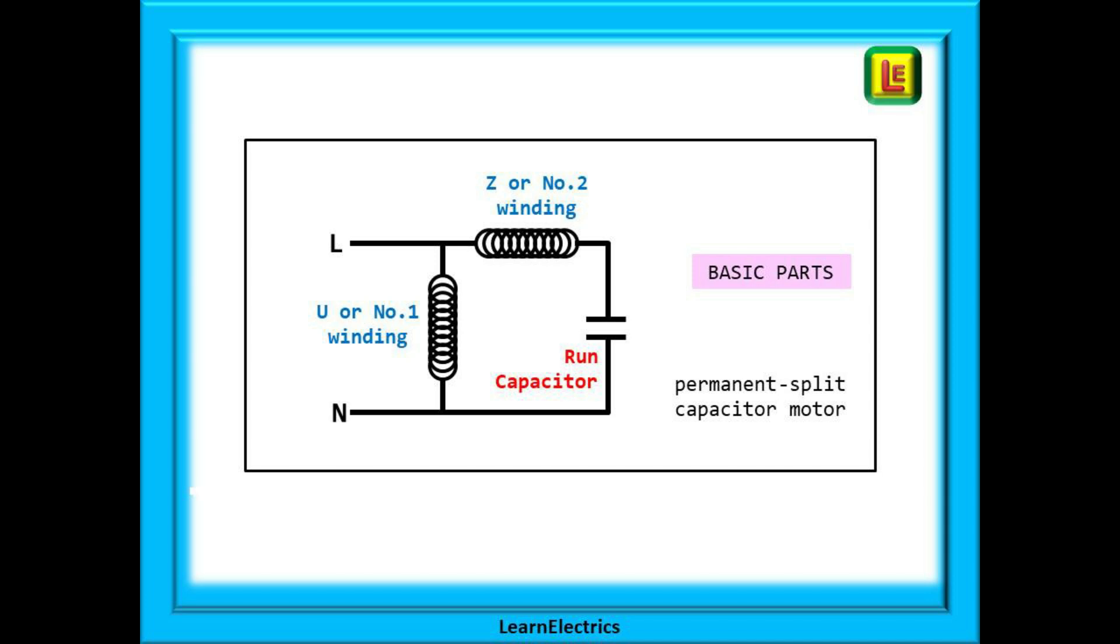If we look at a very basic motor circuit we can see that we have a number one winding that is called the U winding. Then we have a number two winding or Z winding that has a capacitor attached to it. This is called a permanent split capacitor. The circuit is permanently split between the two windings.